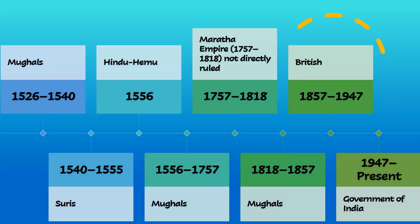The Mughals came to power from 1526 to 1540. They were defeated by the Suris in 1540, who ruled till 1555. Then the Hindu Hemu dynasty came, which was in power in 1556. From 1556 till 1757, again there was a rule of Mughals. In 1757, the Maratha Empire defeated the Mughals and ruled till 1880. From 1818 to 1857, Mughals were once again able to establish their kingdom in Delhi. From 1857 to 1947, the British had their rule in Delhi. From 1947 to the present day, the Government of India has established its government.